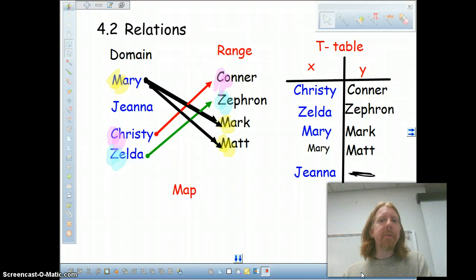There's another problem with it in that Mary is paired with two boys, Mark and Matt. In a function, you're not allowed to pair one item in the domain with two items in the range. In a true function, for every one input there is exactly one output. Not two, not three, one.